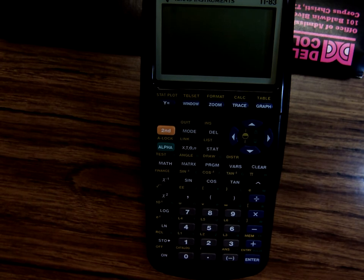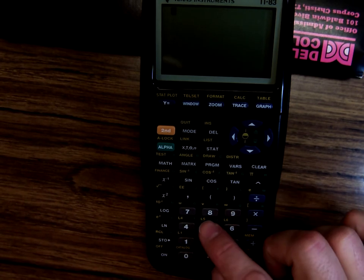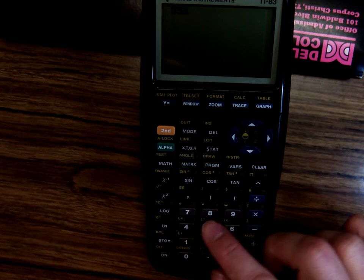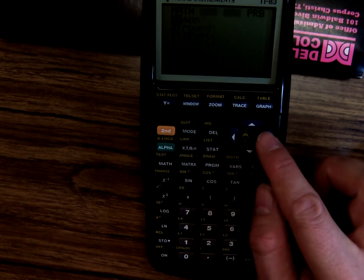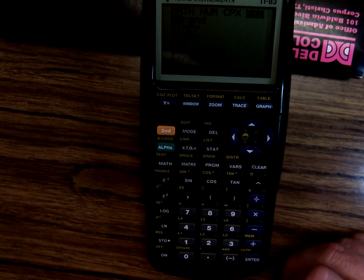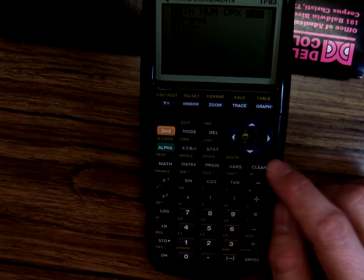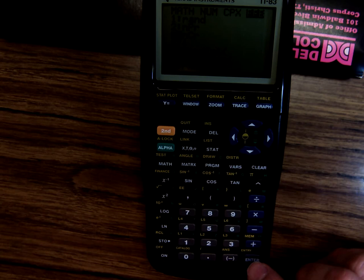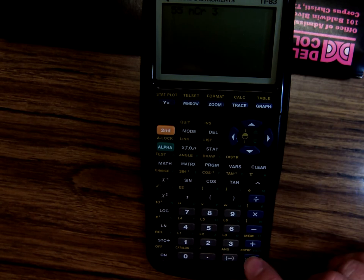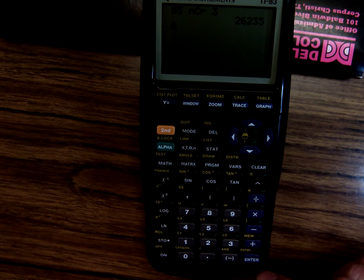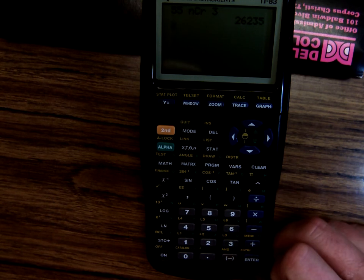To hit that NCR, you would type in 55, and then it's under math. Move over to probability. And then NCR is the third one down. So 55 NCR 3. That's 26,235.